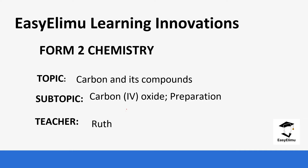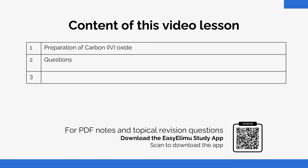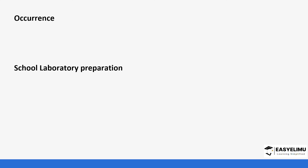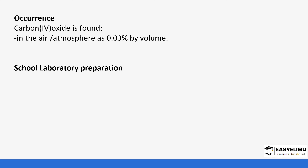Welcome to EZLM Learning Simplified. My name is Ruth and today we are going to be discussing the topic carbon and its compounds. For today we are going to look at the oxides of carbon, specifically carbon dioxide. Carbon dioxide is found in air — it accounts for 0.03 percent by volume.